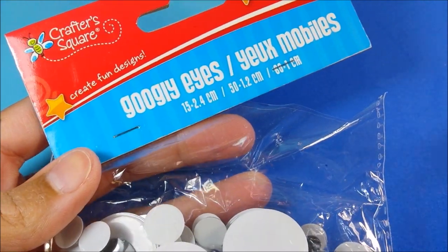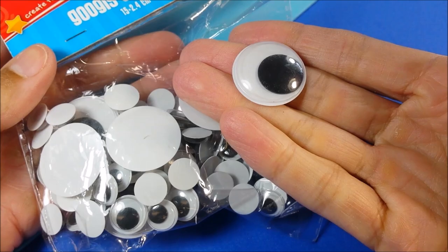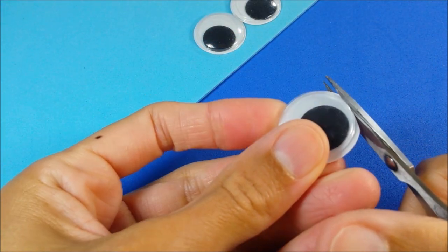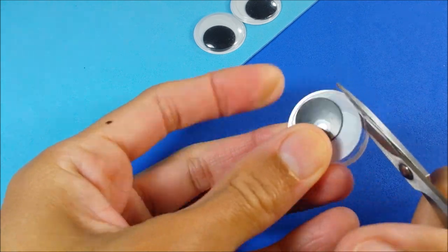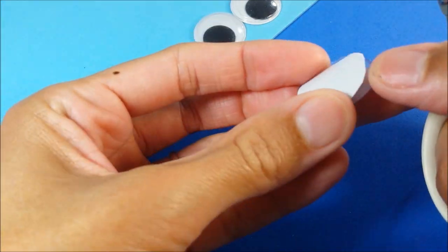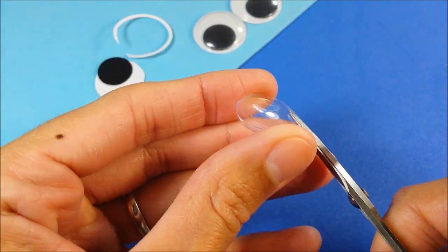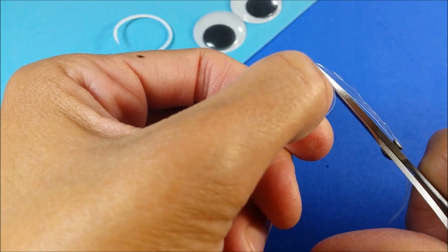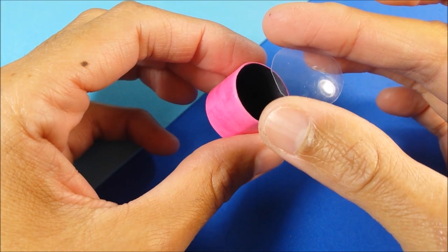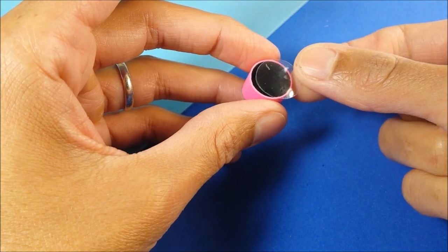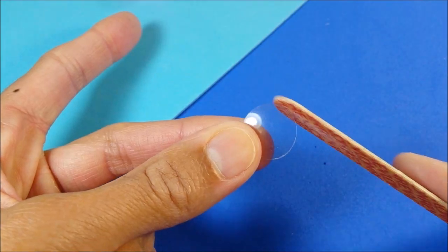Next I'm taking these large googly eyes, which are the perfect size for these pots, and I'm just trimming to size. So two for my larger pots and then a small one for my saucepan. And then I can just use a nail file to smooth it out.